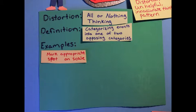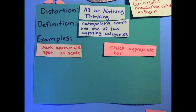I'm going to do my examples a little differently. Rather than giving a specific situation, I'm going to really focus on a visual representation of the change between spectrum thinking, which is more accurate, where something's on a scale and you can mark anywhere in the middle, to either or thinking where you are choosing one or the other. So on one side, there's my mark appropriate spot on scale, and on the other side, we're going to have a check appropriate box.